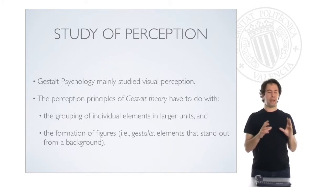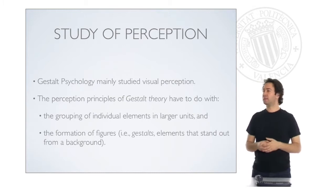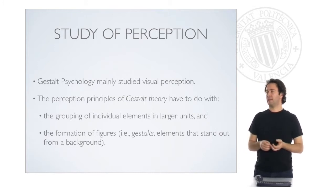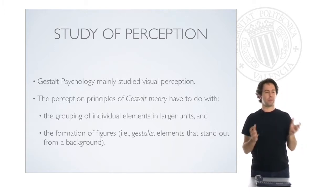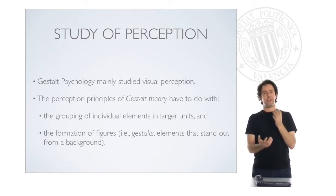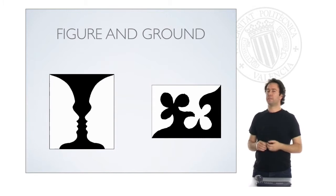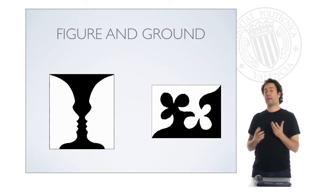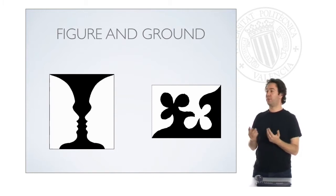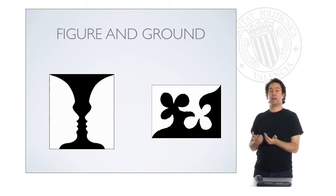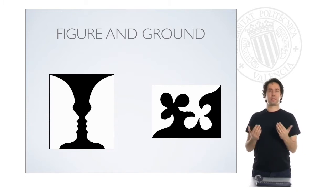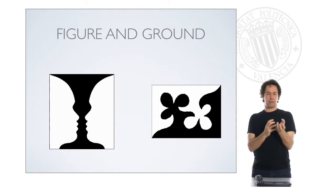This is to say, how we are able to perceive groups of elements, and also the formation of figures — how in a visual perception there are some elements that we perceive as a figure against a background. For example, the figure on the left is one of the most famous in Gestalt theory. Depending on what your brain is doing, you may perceive two faces looking at each other against a black background, or you can see a cup against a white background.